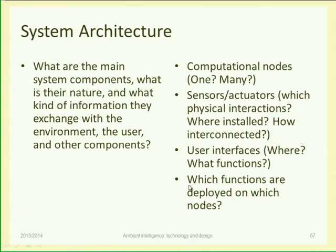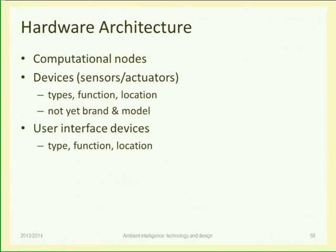Another important concept here is deployment. Deployment in computer science means mapping logical functions to physical devices. For example, if I have an image recognition algorithm, it is 'deployed to the server' — meaning it's installed and will run on the server. Or it could be deployed on the mobile. The same algorithm always needs a CPU to run, so 'which computer?' is what we call the deployment of an application: installing and running on a given piece of hardware.